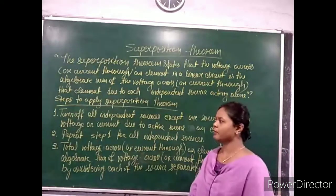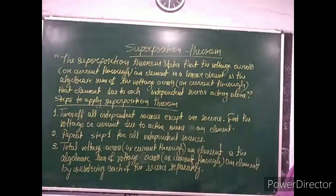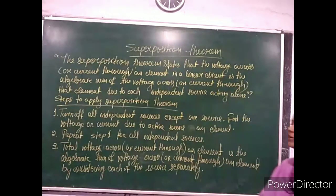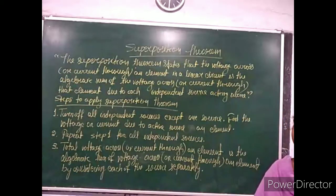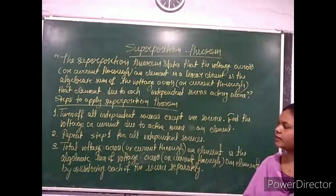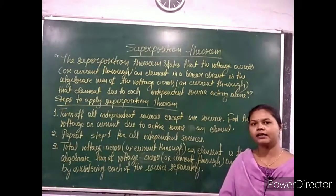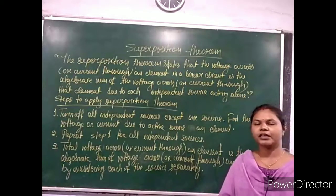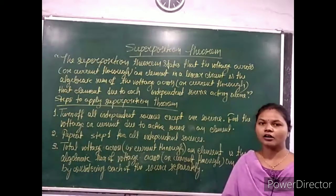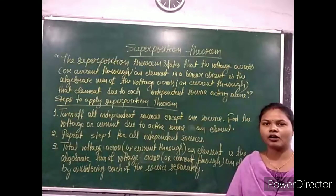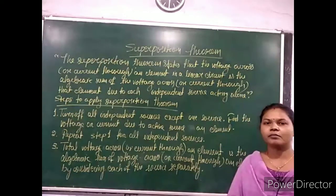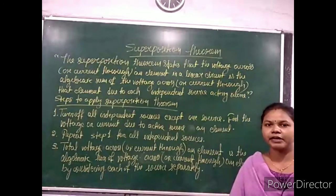The first step is to turn off all independent sources except one source, then find the voltage or current due to that active source and element. Second, repeat step one for all independent sources. Third, the total voltage across or current through an element is the algebraic sum of contributions from each source considered separately.